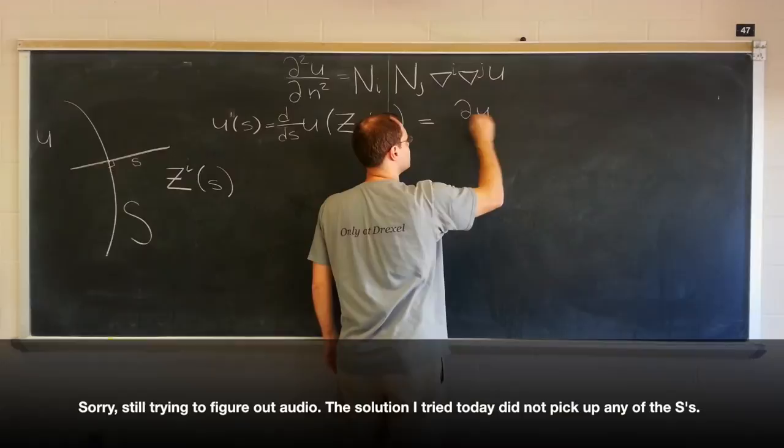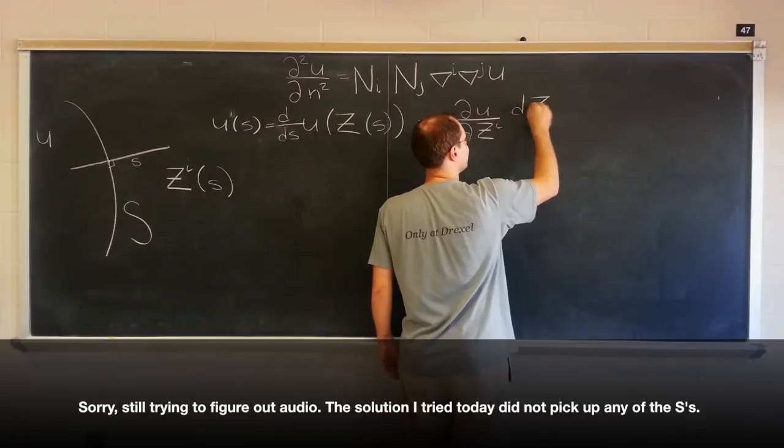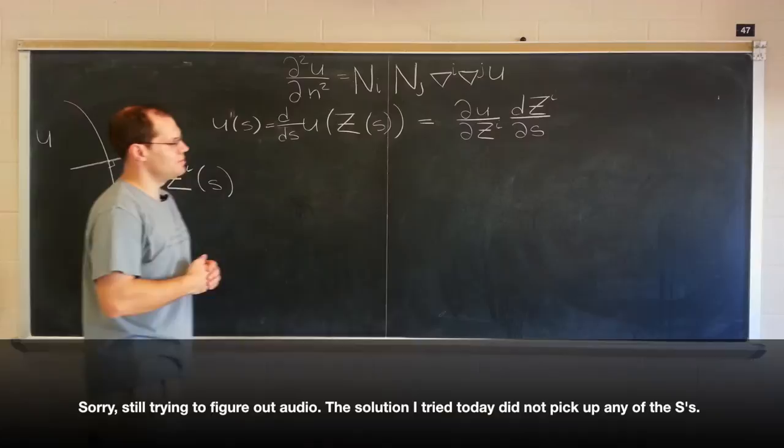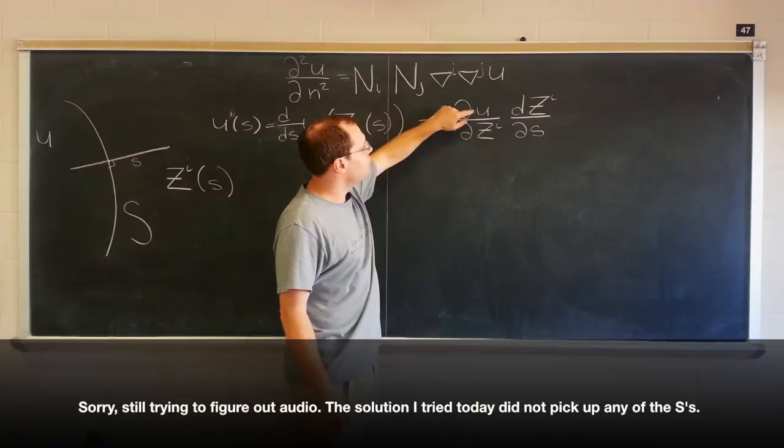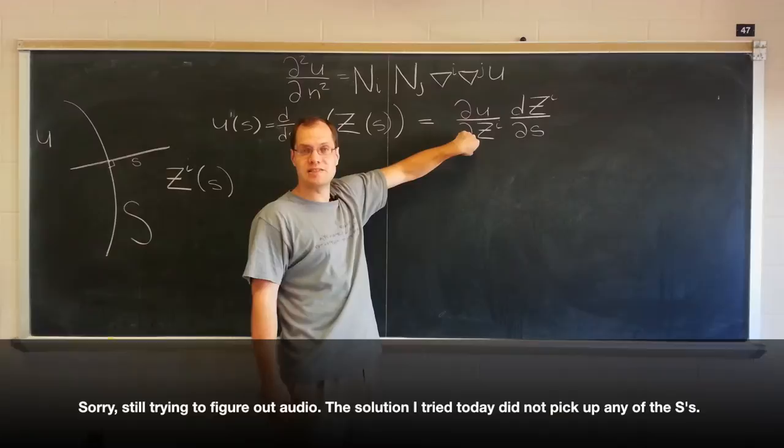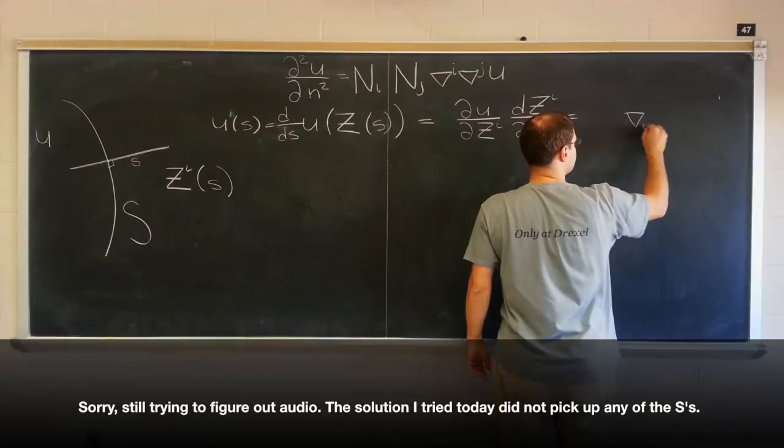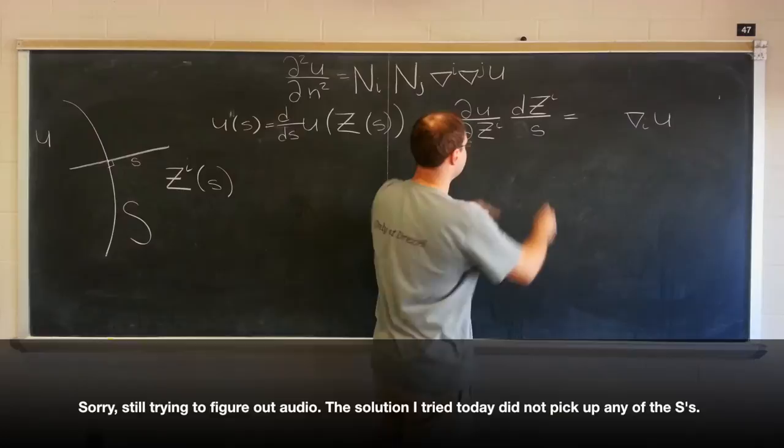We have du/dz^i, dz^i/ds. And let's think about these terms a little bit. So, du/dz^i is, of course, the covariant derivative of u with respect to z^i. Yes, it's a partial derivative. But recall that for invariants or any tensors of order zero, a partial derivative coincides with a covariant derivative. So, this is this symbol, covariant derivative of u.